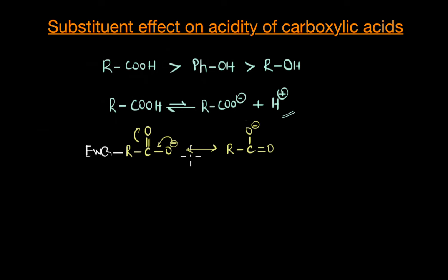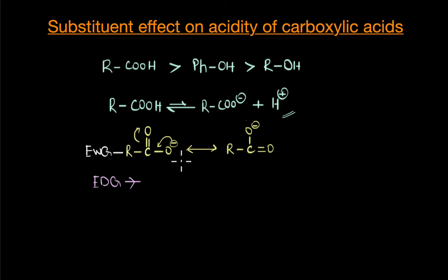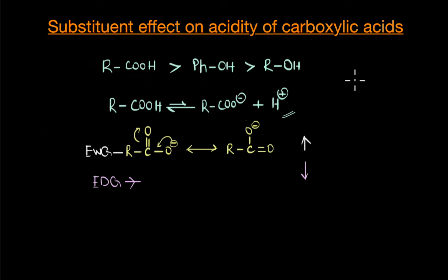The exact opposite effect can be expected when we have an electron donating group. An electron donating group adds more electron density to an already electron-dense carboxylate ion, so it is not helping it to stabilize — it is actually having a destabilizing effect by adding more charge to it. This is why an electron withdrawing group increases the stability of a conjugate base and thereby increases the acidic character of an acid, while an electron donating group decreases the stability of the conjugate base and thereby decreases the acidic character.